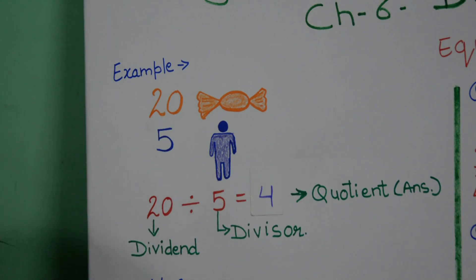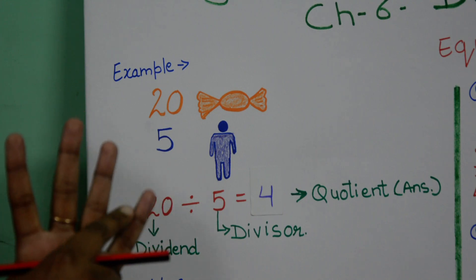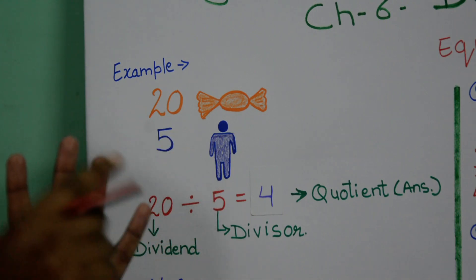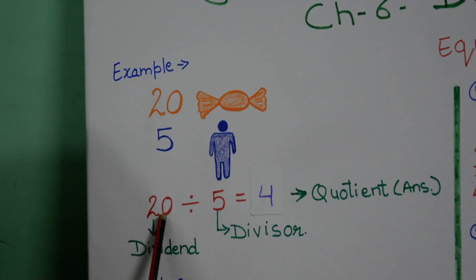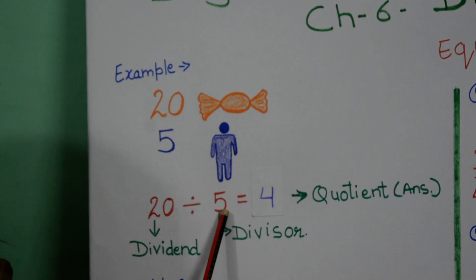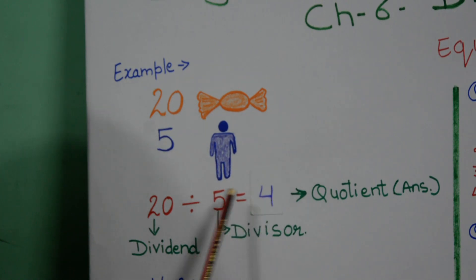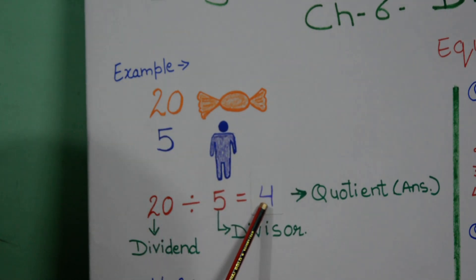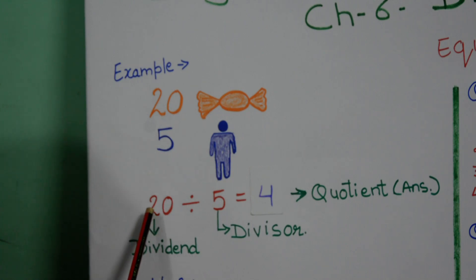Now you can do it like this — you are 5 friends, you can give 1 toffee each and then repeat this. But instead of doing that method, the best thing is to divide 20 by 5, because you have 5 friends and 20 toffees. Now, 5 fours are 20, so each one of you will get 4 toffees. Now in this question, 20 toffees are called the dividend.